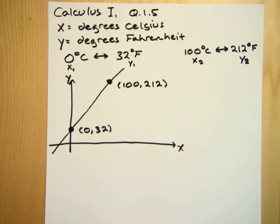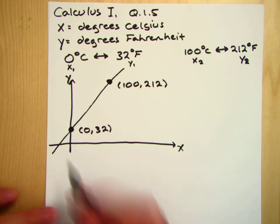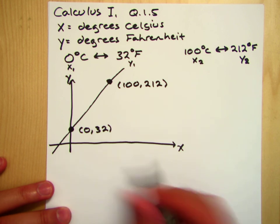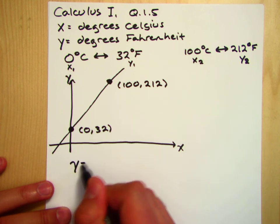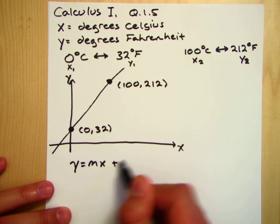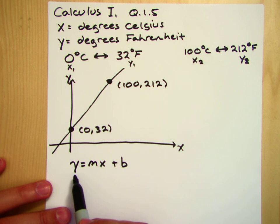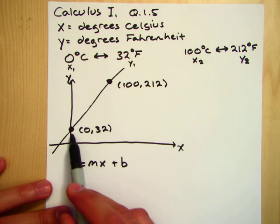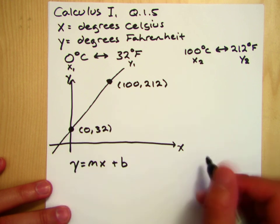Well, the good news is, one of these points is already an intercept, this one right here. So the y-intercept, we want to get this into a form y equals mx plus b, where y is the Fahrenheit and x is the Celsius. Well, we've already got b because we've got this point right here. b is equal to 32.